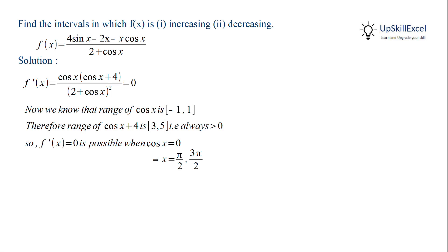So these critical points x equals π by 2 and 3π by 2 divide our interval 0 to 2π into 3 disjoint intervals: 0 to π by 2, π by 2 to 3π by 2, and 3π by 2 to 2π.